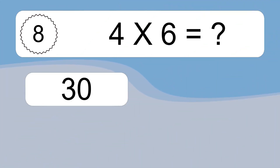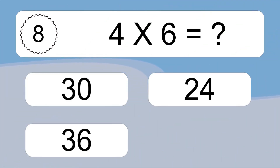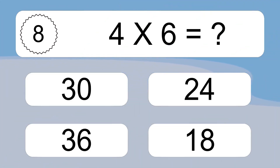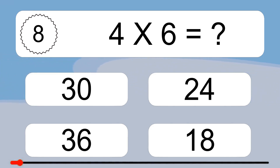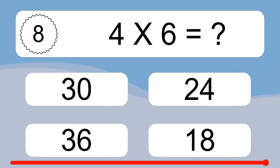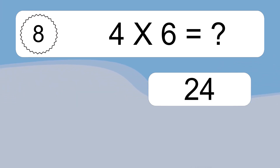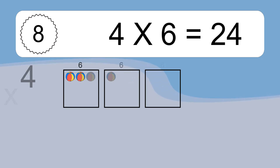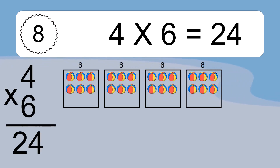4 times 6 equals what? 4 times 6 equals 24.